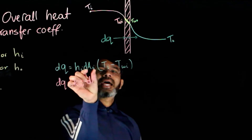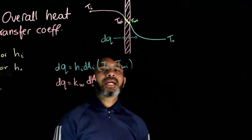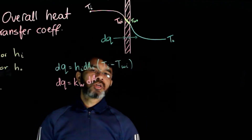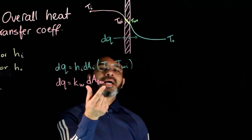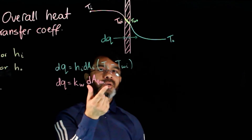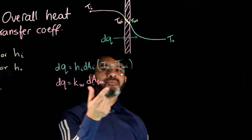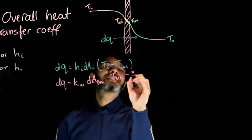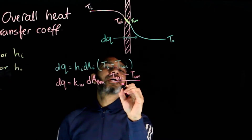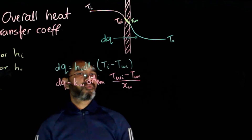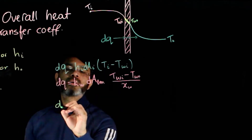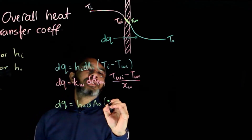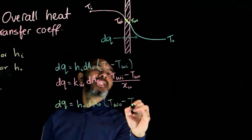D_I was the inside area of the tube. For conduction, we need to account for the fact that the inside area and outside area of the tubes are not the same, so we must use the logarithmic mean area. We use the logarithmic mean for that area and have (T_WI minus T_WO) over X_W, which is the thickness of the wall. For the outside or cold side we write H_O times dA_O times (T_WO minus T_O).